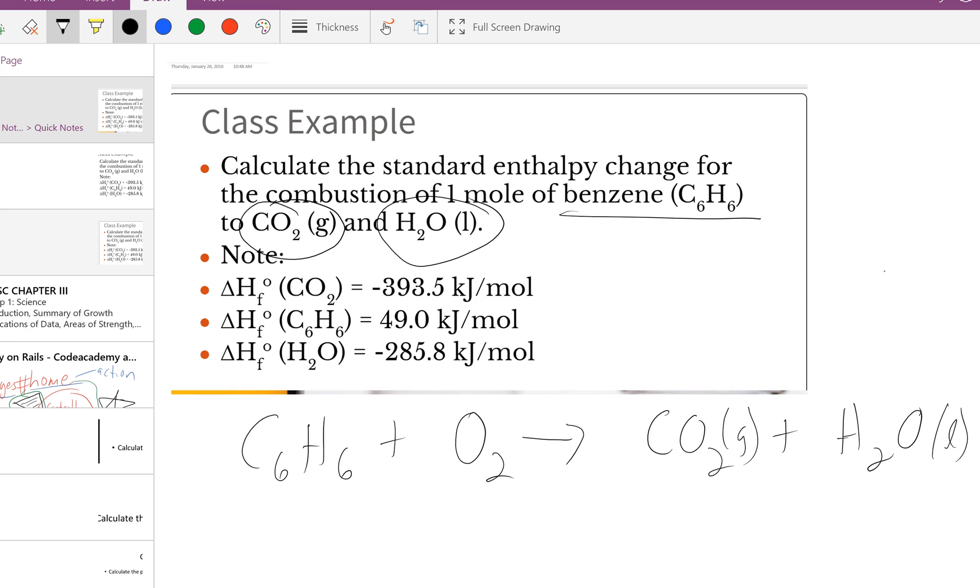One thing we have to do is balance this chemical equation. I have six carbons on the left, so I need a six in front of the carbon dioxide. If I have six hydrogens on the reactant side, I need six hydrogens on the product side, so I'll put a three as my coefficient here.